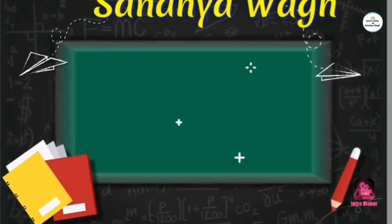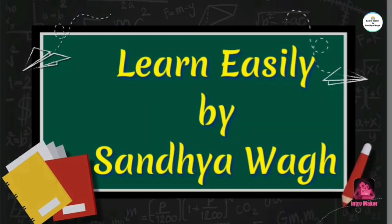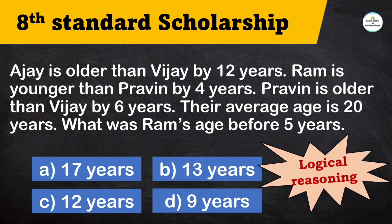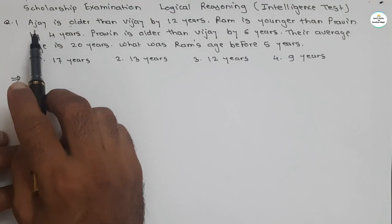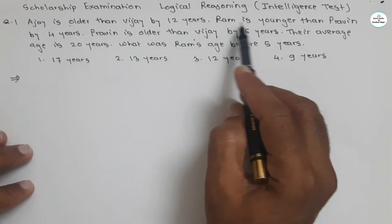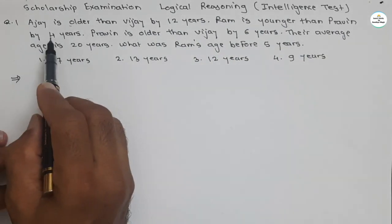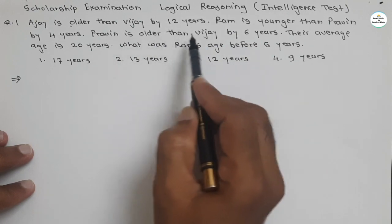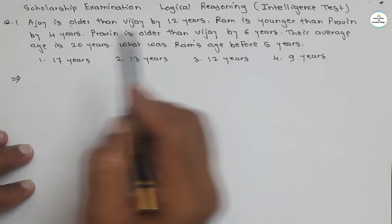Hello dear all, I am Santosh Vav and welcome to channel Learn Easily by Sandhya Vav. Here we will see a scholarship examination question which is related to the logical reasoning section. The question: Ajay is older than Vijay by 12 years, Ram is younger than Praveen by 4 years, Praveen is older than Vijay by 6 years.